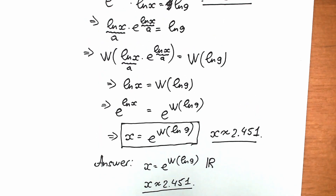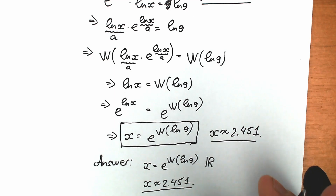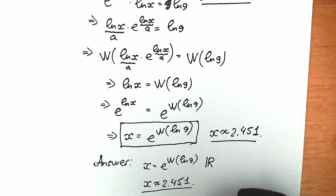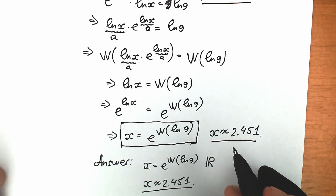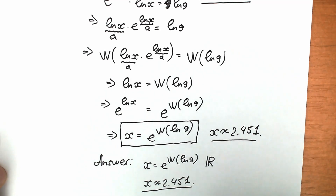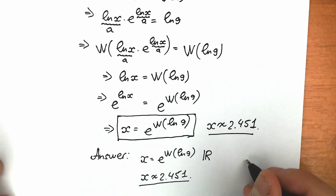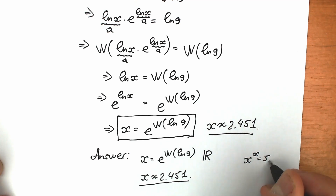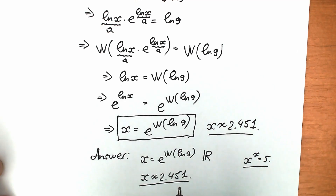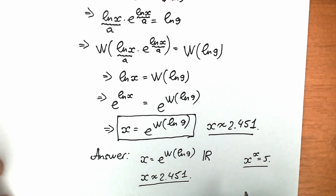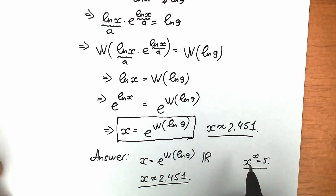This is a basic question using Lambert W function. If you want to practice, you can solve the homework: x to the x equal to 5. You will get natural log 5 in the end, and you can easily practice this Lambert W function technique.